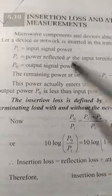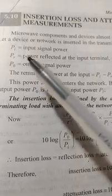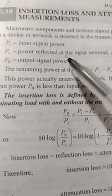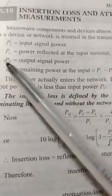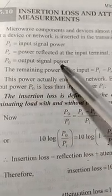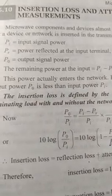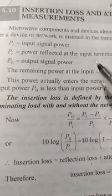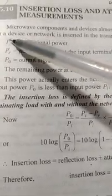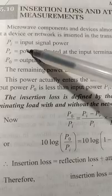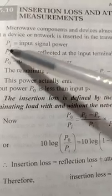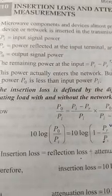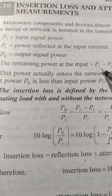Let us see some of the main important terms. Suppose we have provided the input signal power Pi, and the power reflected at the input terminal due to mismatching is Pr, and P0 is the output signal power reaching at the other terminal of the device we are inserting. The remaining power which has gone inside the device is Pi minus Pr.